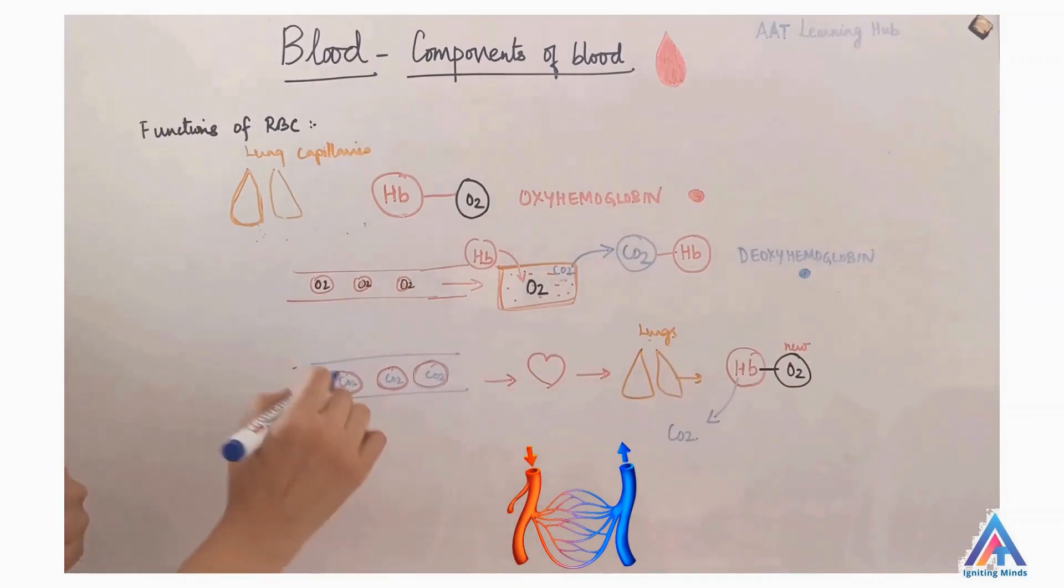Now, carbon dioxide-rich RBCs travel via venous blood to the heart and then to the lungs. Within the lung capillaries, carbon dioxide is released from hemoglobin in exchange for new oxygen.